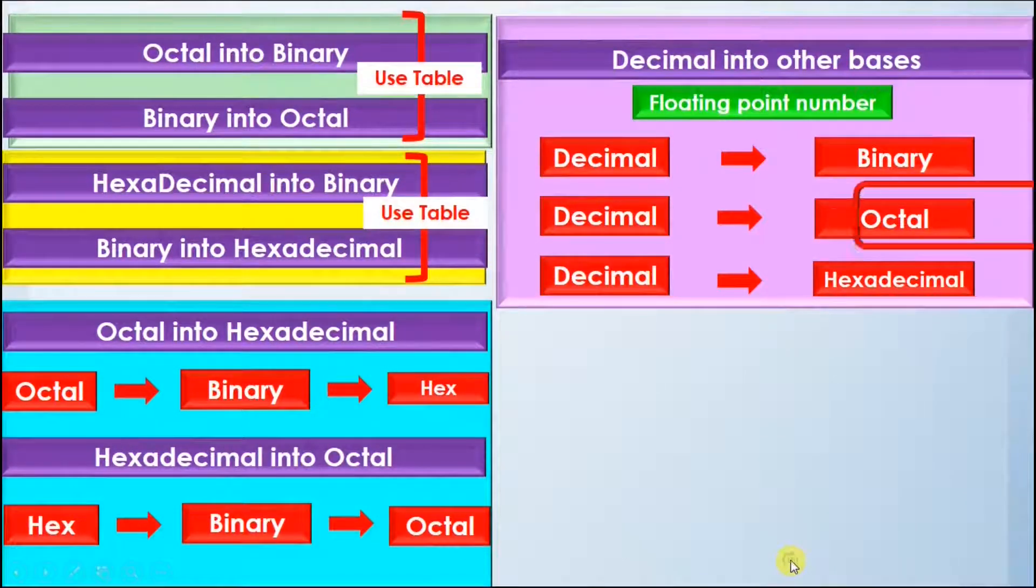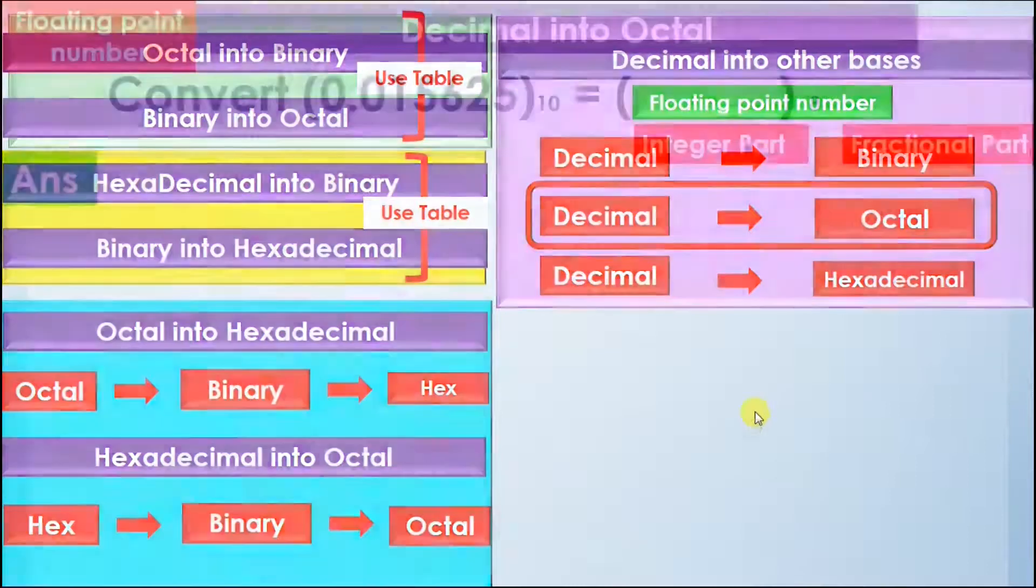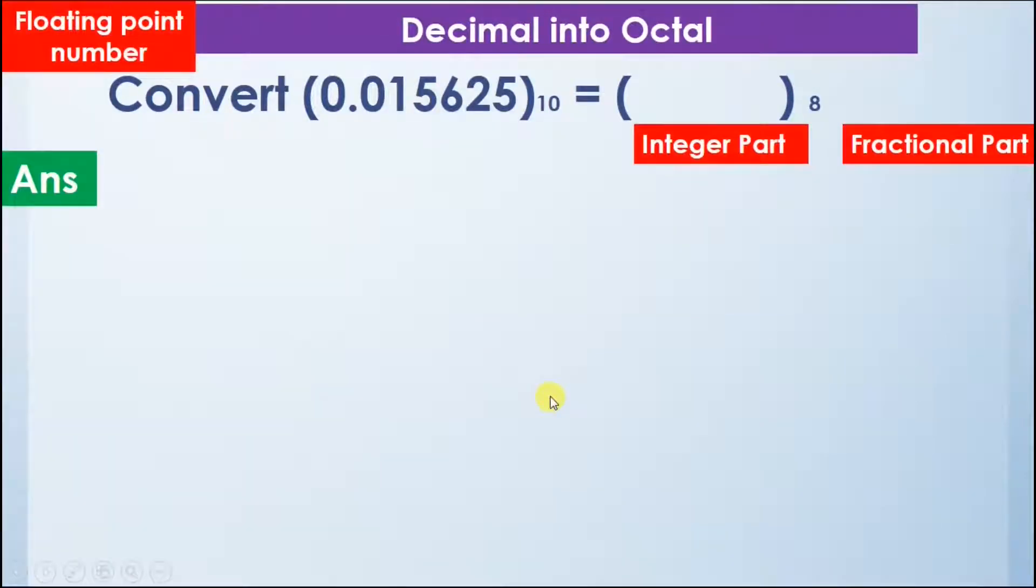So now we will see how to convert decimal into octal using floating point numbers. The procedure is almost the same, but the only difference is that when we were converting decimal into binary we multiplied the number by 2, but in this case we will multiply the number with 8 because we have to convert decimal into octal and octal has the base 8.